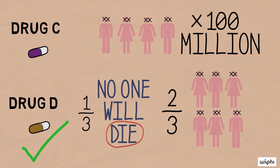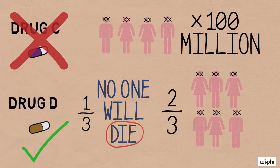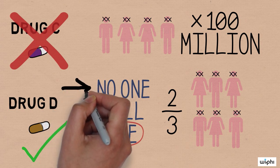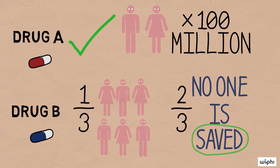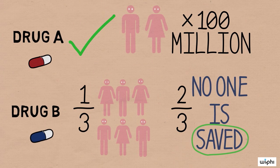Loss aversion causes us to latch onto the fact that drugs C and D involve losing lives. Our aversion to any potential losses causes us to avoid drug C and to go with drug D, which is the chance of not losing anyone. Our loss aversion isn't as activated when we hear about drugs A and B. Both of them involve saving people. So why not go with the safe option, drug A over drug B?